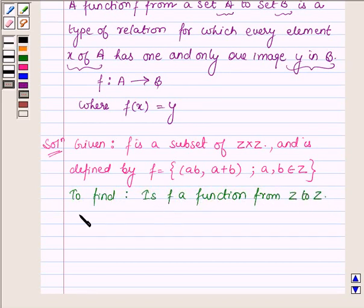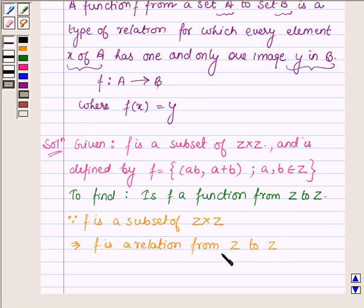Now as f is a subset of Z cross Z, this implies f is a relation from Z to Z. Since a relation from Z to Z is the Cartesian product of the subsets of Z cross Z.